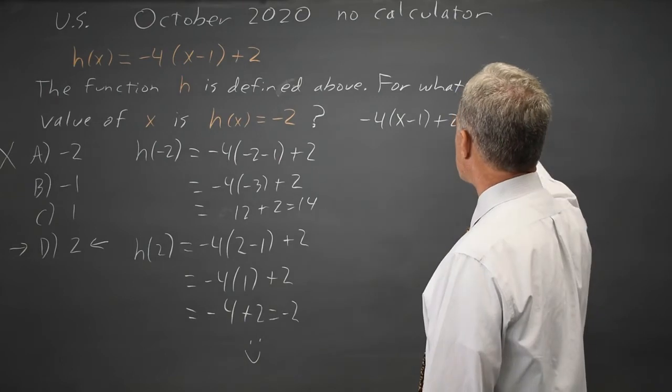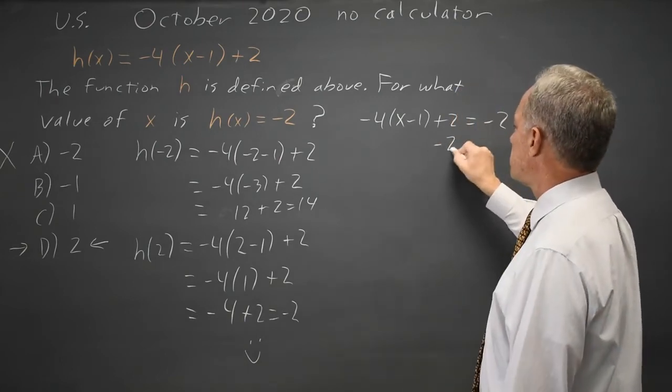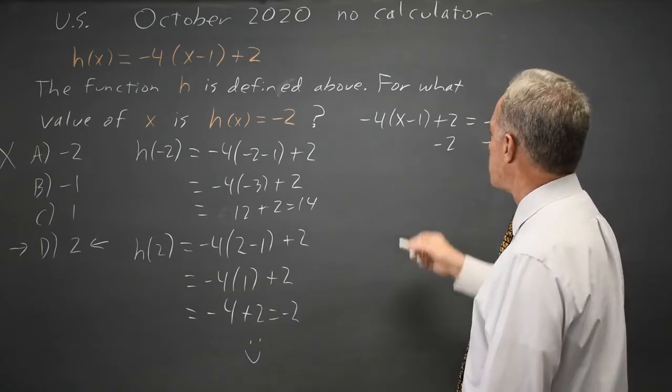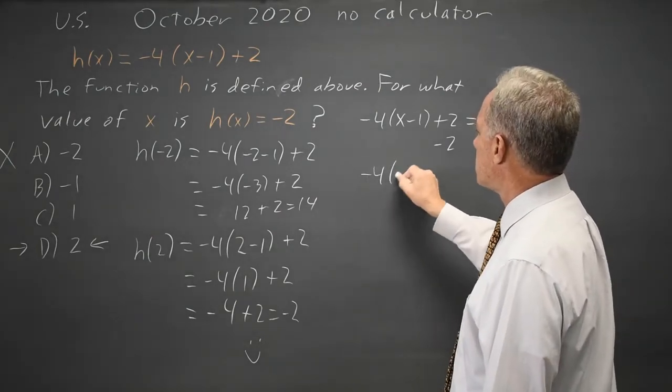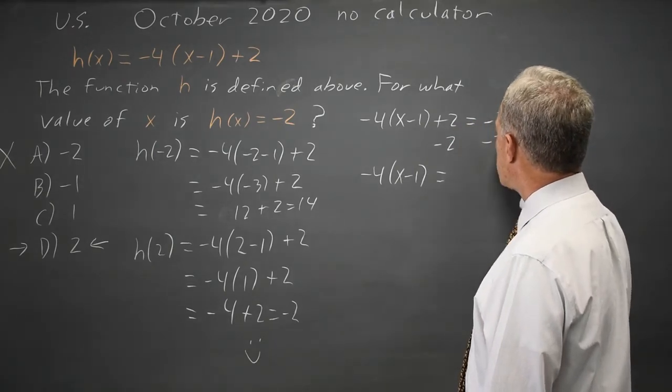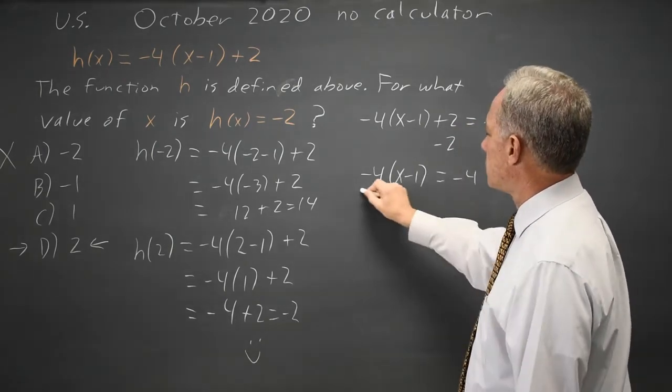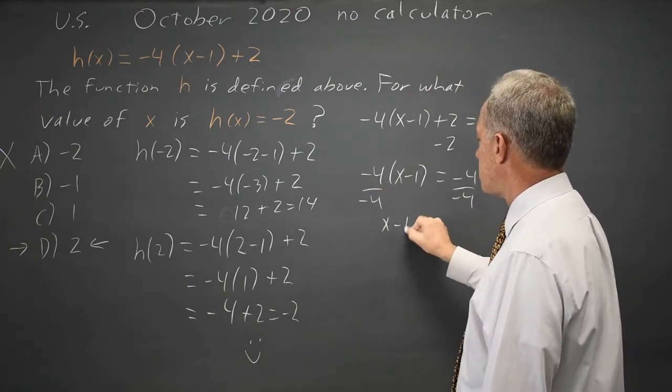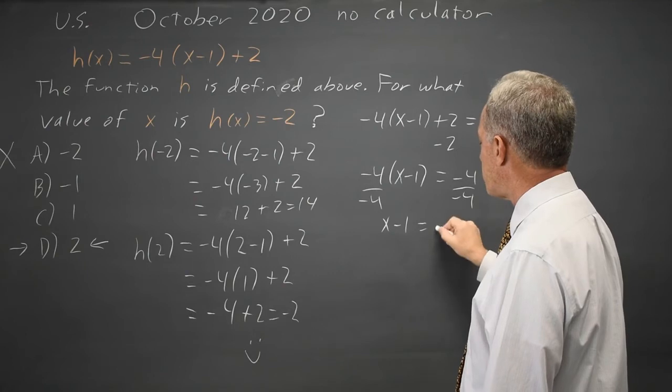I want that expression to equal -2. So let's subtract 2 from both sides to collect the constant terms that are not multiplied by anything. I'm doing -4(x-1). 2-2 is 0 equals -2-2 is -4. Divide both sides by -4 and I get x-1 equals -4 over -4 is positive 1.